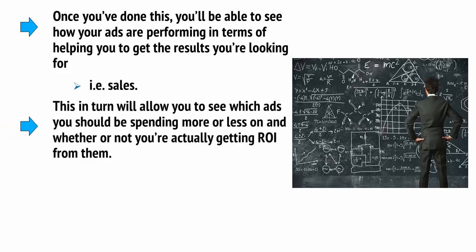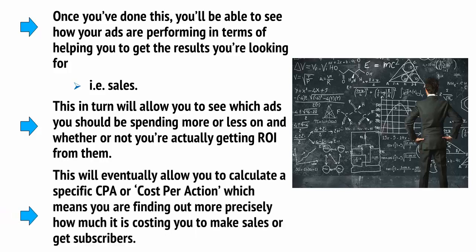This, in turn, will allow you to see which ads you should be spending more or less on, and whether or not you're actually getting ROI from them. This will eventually allow you to calculate a specific CPA — or cost per action — which means you're finding out more precisely how much it's costing you to make sales or get subscribers. You'll also be able to do a lot more tracking for your ads, and looking around the dashboard will help you find all kinds of useful options.